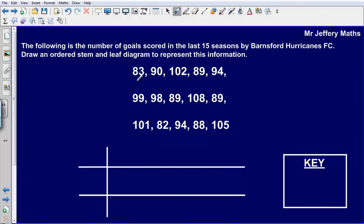So what we will do first of all is look at what numbers we have got here. We have got numbers that are in the 80s, so I am going to put an 8 there, that represents my tens. We have got numbers in the 90s, so we will put a 9 there, that represents the 90s. And then we have got numbers in the 100s, so we will put a 10 there to represent 10 tens.